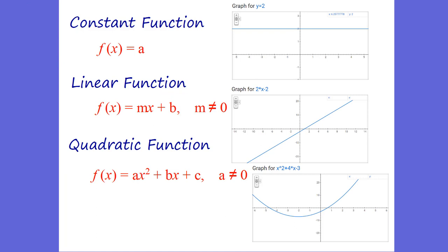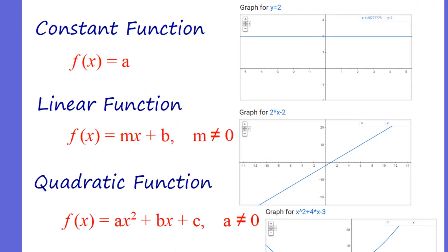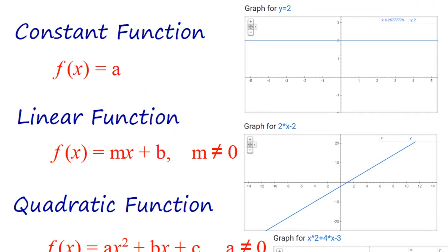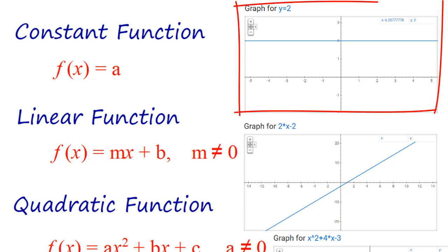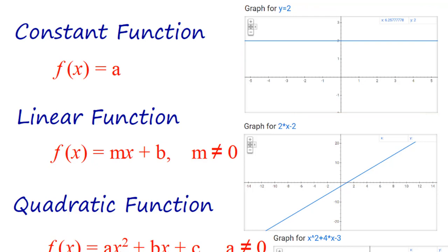We know that there's a bunch of different kinds of functions from this point in our math. We know we have things like the constant function, which is just f of x equals some constant a. So if we have y equals 2, the y values will always be 2 for every single value of x.